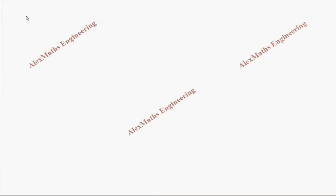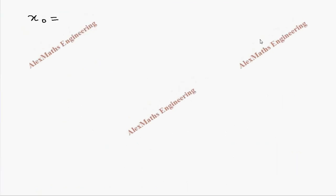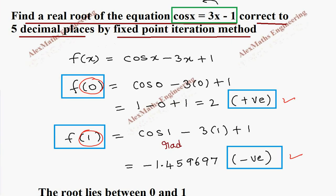Now we have to choose the initial value x0. Let's take x0 as somewhere in the middle of the interval where f(x) changes its sign. Here it changes from positive to negative between 0 and 1, so let's take the value around the middle, which is 0.5. We have the iteration formula x = (cos x + 1) / 3, and we need to maintain 5 decimal places to arrive at the correct solution.